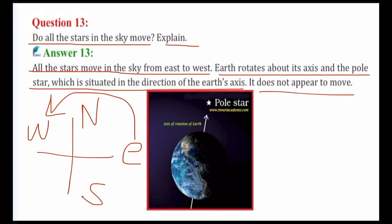So normally, stars do not move in the sky. But they appear to move from east to west. What's the reason behind this? Earth rotates from west to east on its axis. And that is why it appears that stars have moved from east to west. And in the case of pole star, the pole star is situated in the direction of Earth's axis, and it does not appear to move.